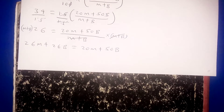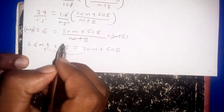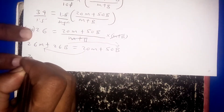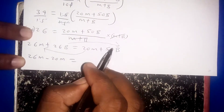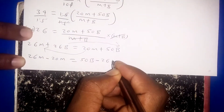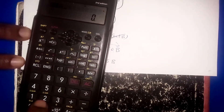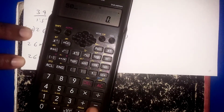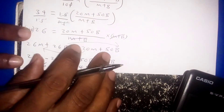Collecting like terms while avoiding negatives: bring 20M to the left and 26B to the right, giving 26M − 20M = 50B − 26B, which simplifies to 6M = 24B.